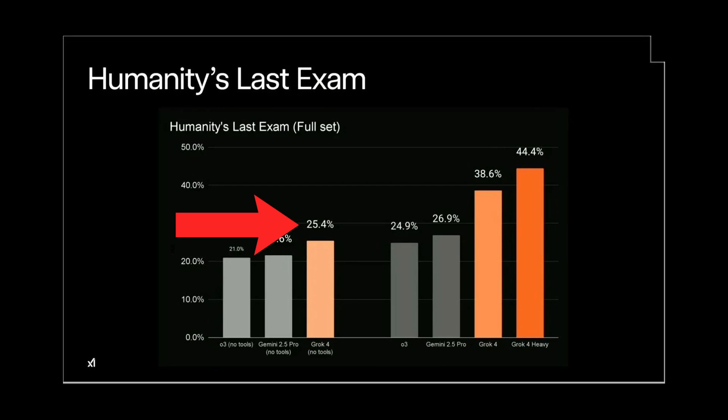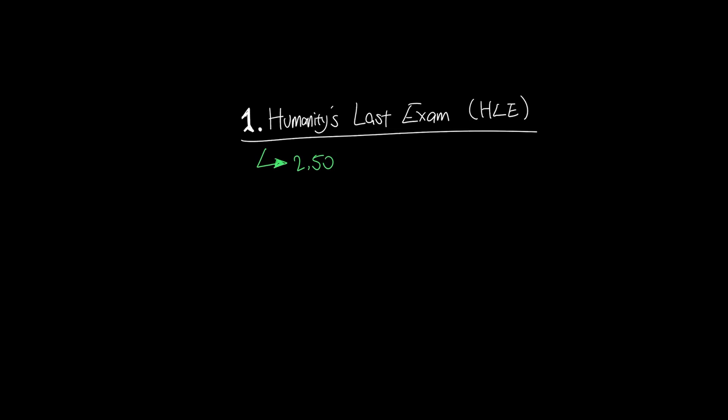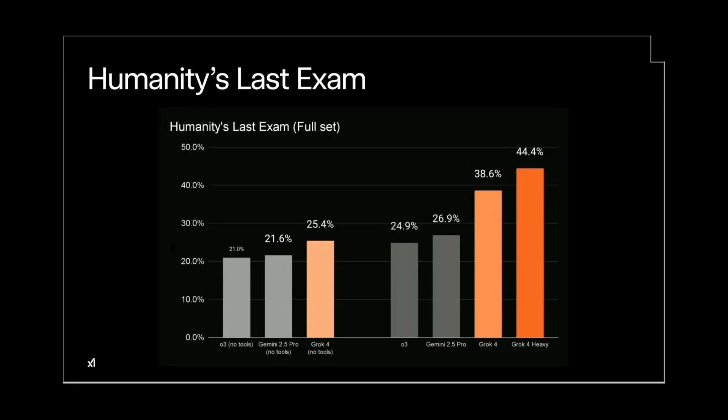For example, Grok 4 scored 25% without tools and 44% with tools on HLE or Humanity's Last Exam, which consists of 2,500 questions that are engineered to be very difficult to answer across a wide array of subjects. Think of it like Jeopardy, but for LLMs. So for Grok 4, how you can think about the actual result is this.